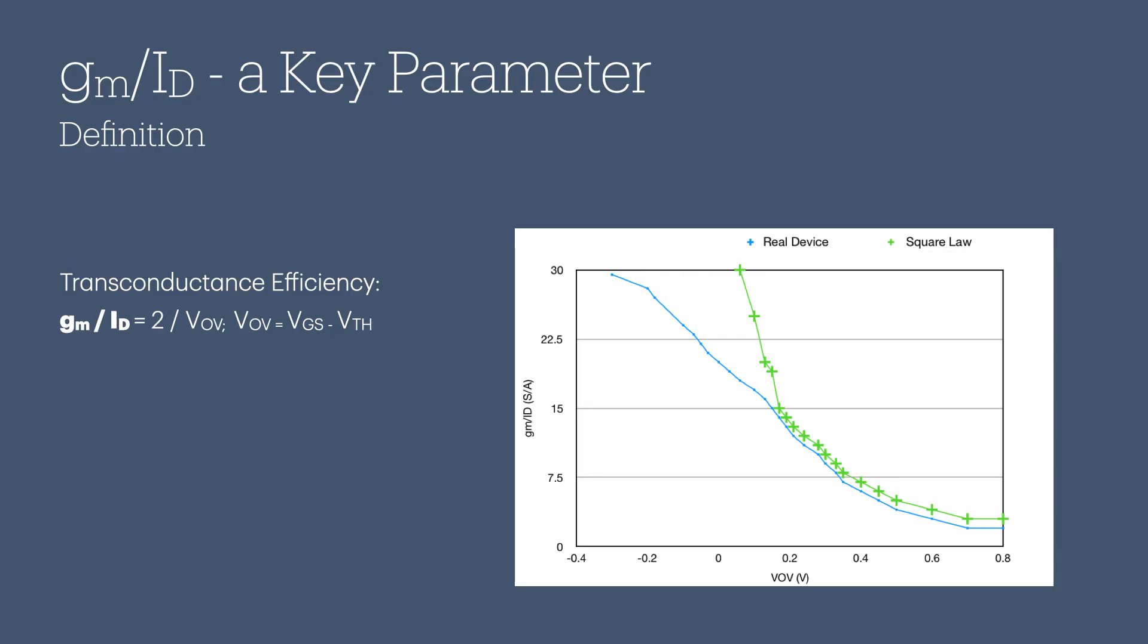GM over ID is an important figure of merit when sizing transistors. For a given GM, it indicates how effectively a device converts bias current into transconductance. This is known as transconductance efficiency. As shown in the diagram, GM over ID spans the entire range of overdrive voltage (VOV). This remains true for all modern CMOS technologies as well.